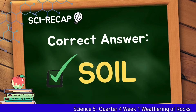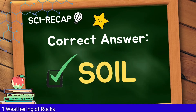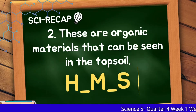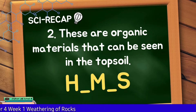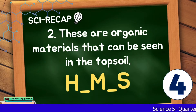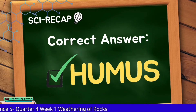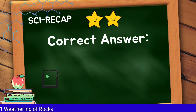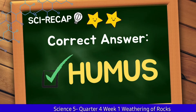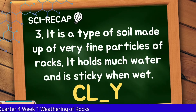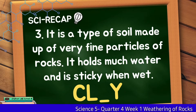Very good! The correct answer is soil. You have 1 star for that correct answer. Number 2: These are organic materials that can be seen in the topsoil. Good job! The correct answer is humus. You have 1 star for the correct answer. Number 3: It is a type of soil made up of very fine particles of rocks.